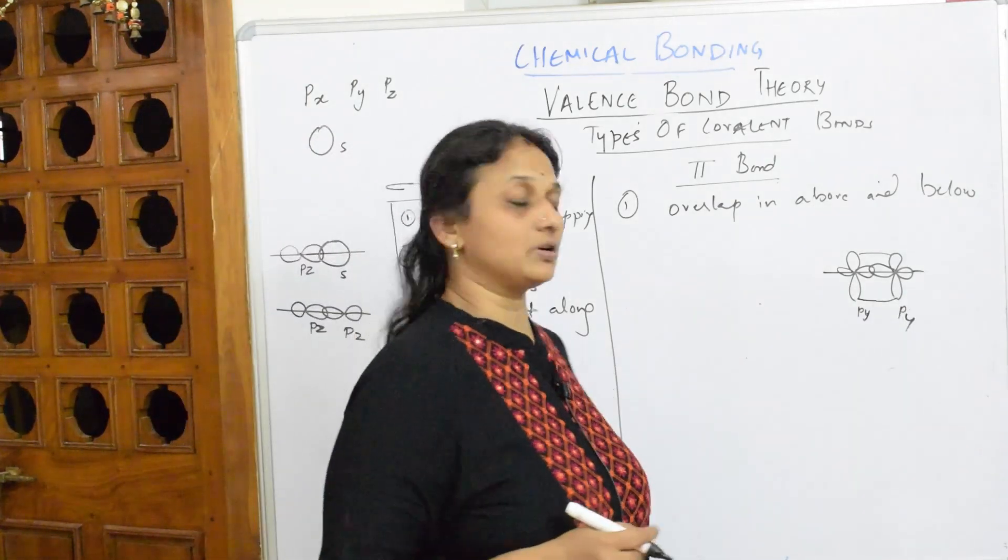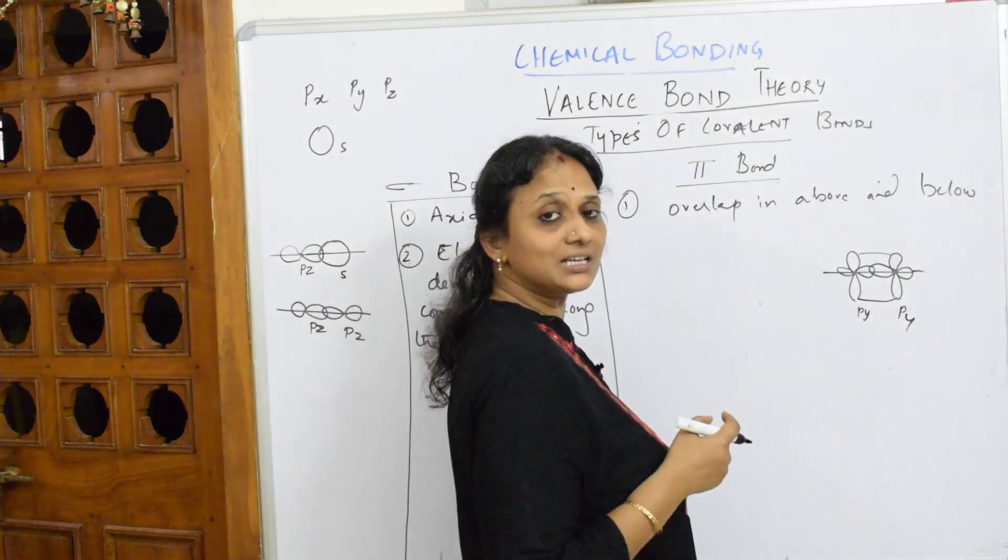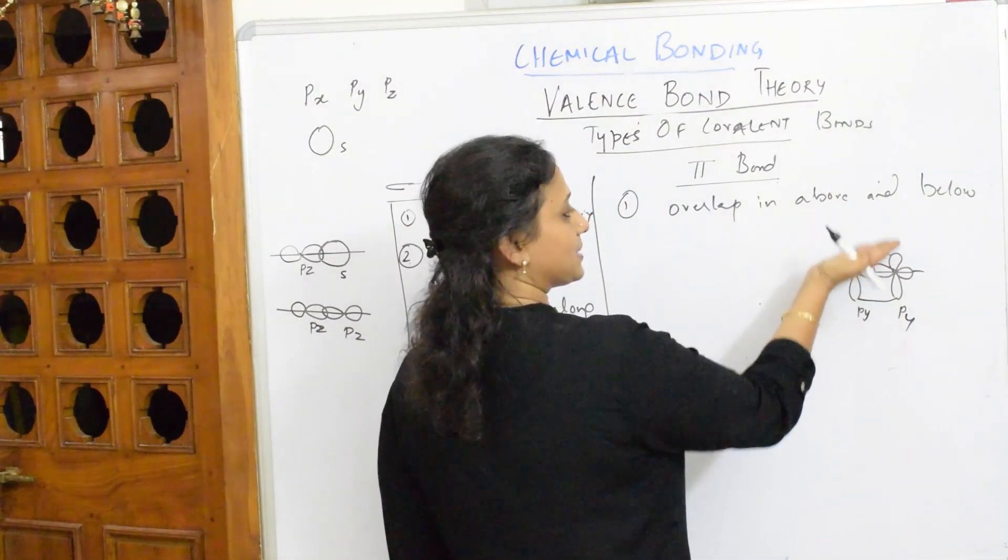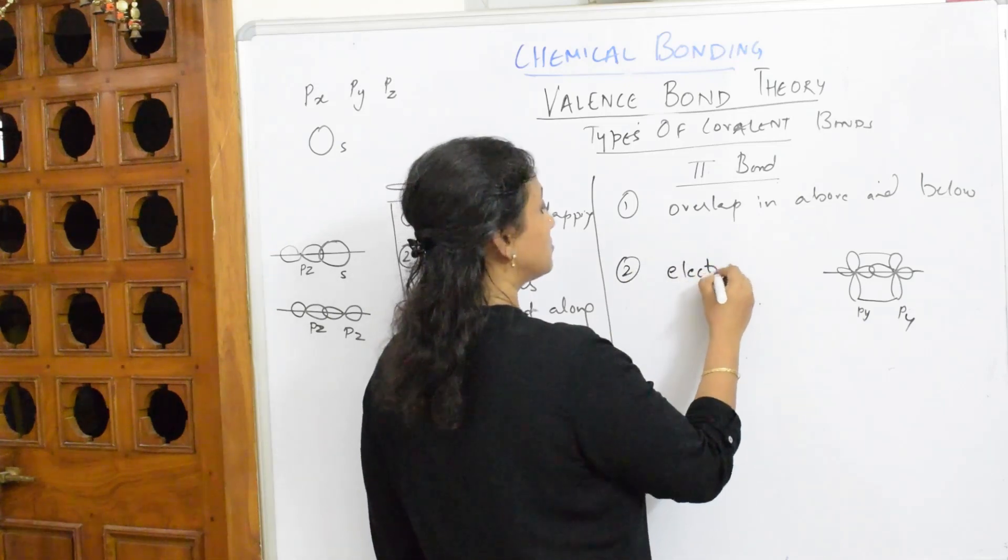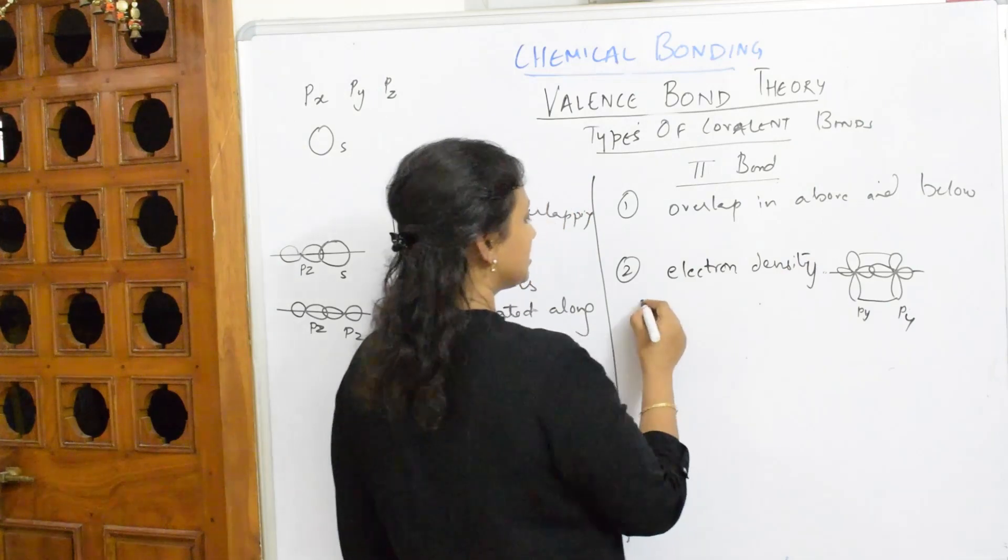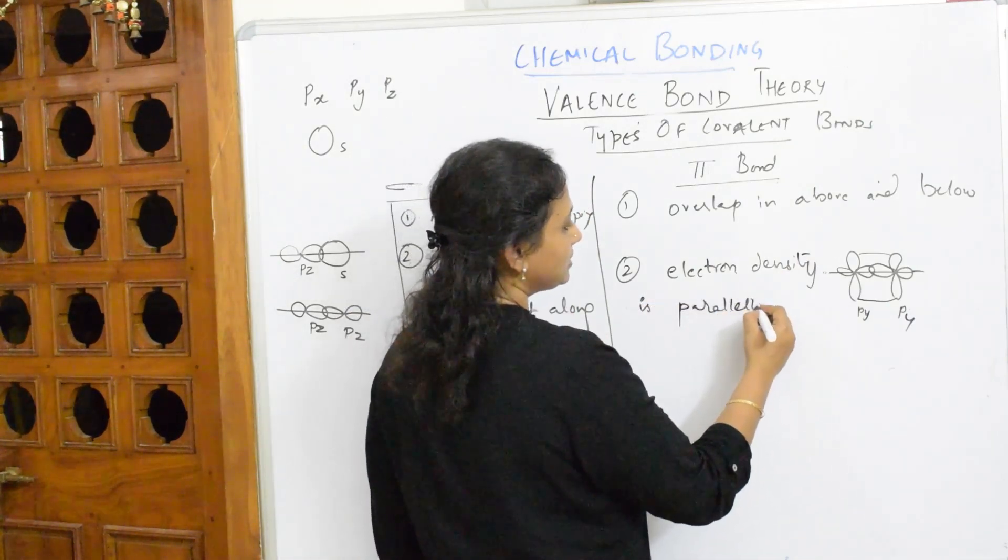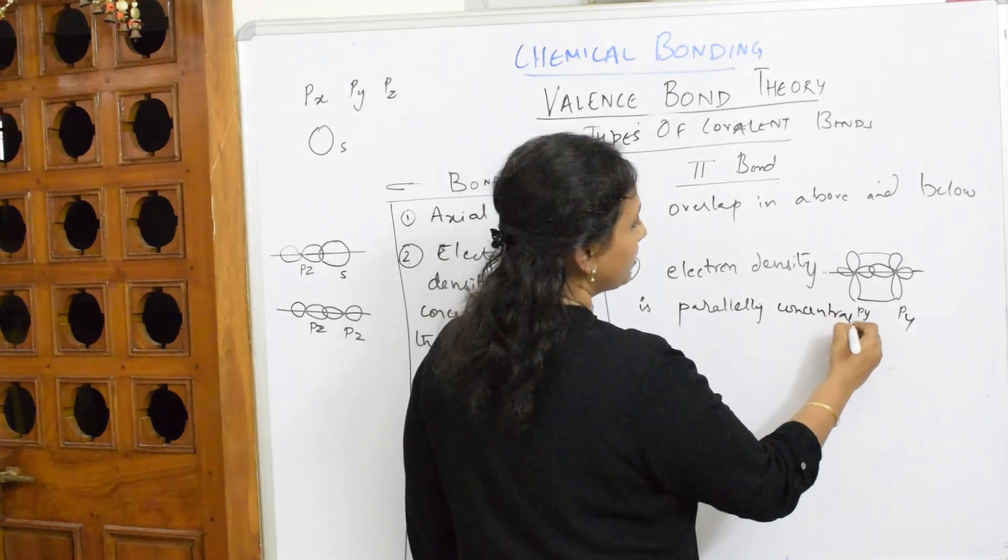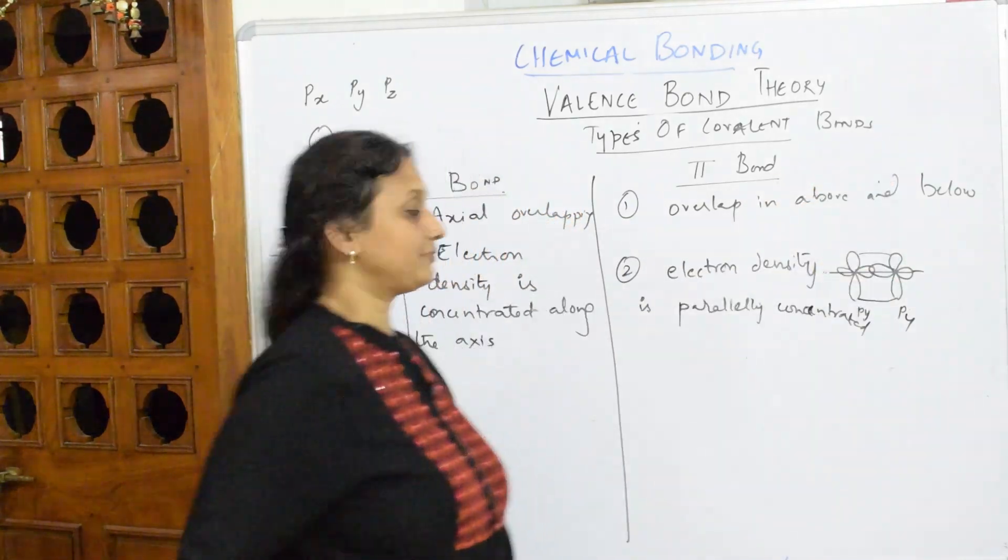When I observe this particular bond, where is the electron density concentrated? It is above and below. Is it stronger than sigma bond? No, it doesn't because there is charge separation. There is separation of cloud above and below. So electron density is parallelly arranged or parallelly concentrated. It is concentrated above and below.